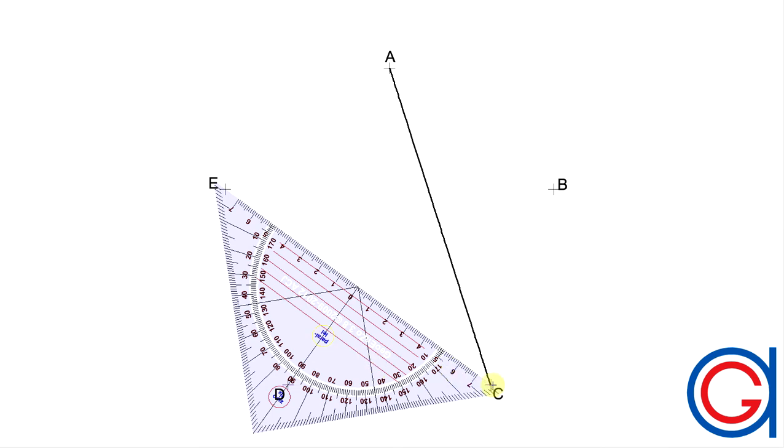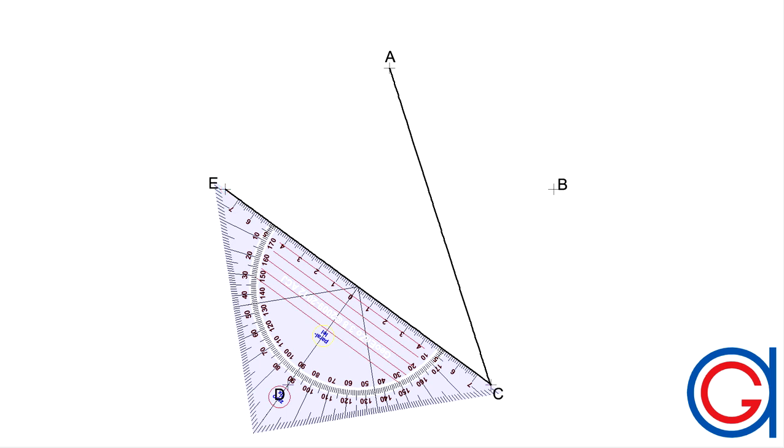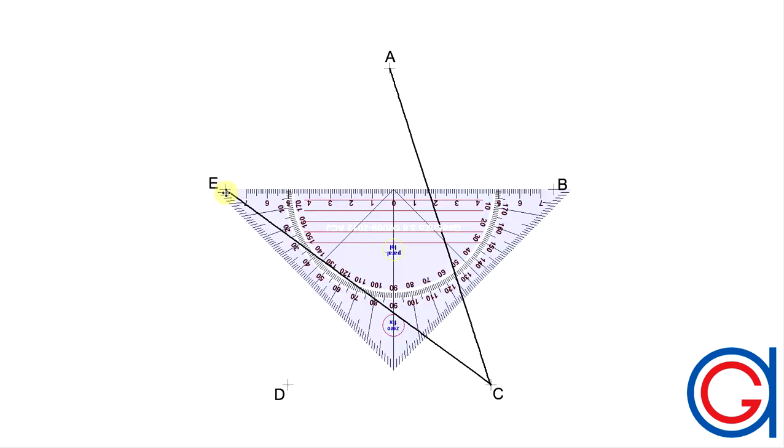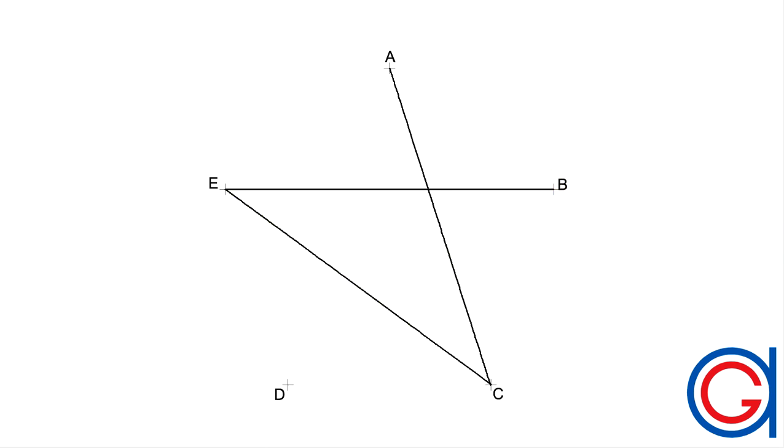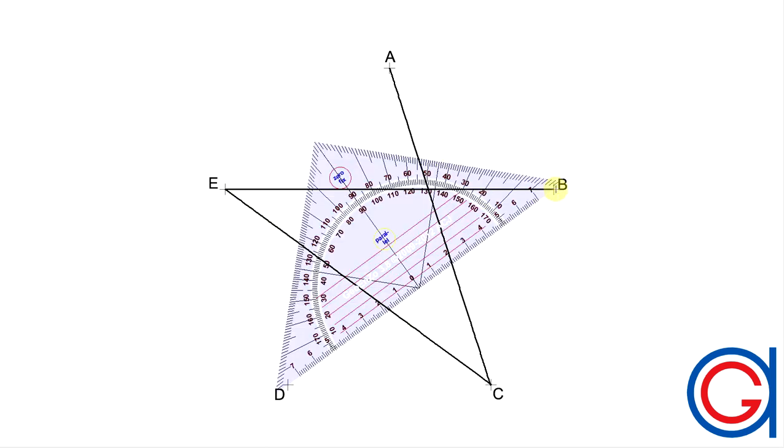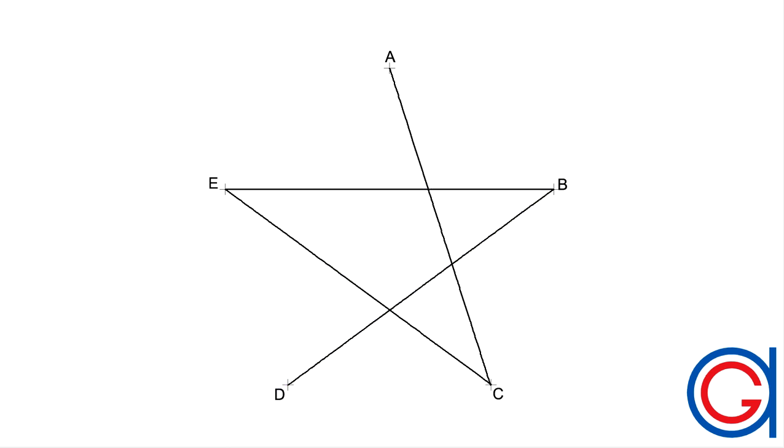Now, we will join vertex C to vertex E, skipping vertex D. Now, we will join vertex E to vertex B, skipping vertex A. And vertex B to vertex D, skipping vertex C. And finally, we will join vertex D to vertex A, skipping vertex E.